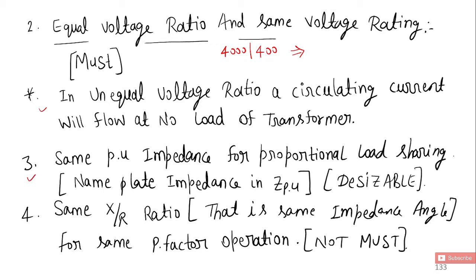Point number three: Same per unit impedance for proportional load sharing. In the upcoming lecture I will tell you about this proportional load sharing. Z per unit is written on the name plate of the transformer. This is not a required condition, this is desirable.